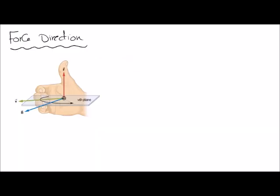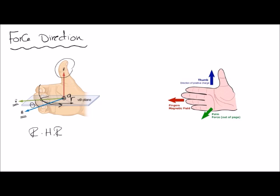How do we get the direction of the force? We use the right-hand rule. Imagine a charge Q moving with velocity V making an angle theta with the magnetic field B. Using your right hand, curl your fingers from the velocity toward the magnetic field — your thumb shows the direction of the force. Another way: make your right hand flat, point your thumb in the direction of velocity and your fingers toward the magnetic field; the force is the perpendicular vector to your palm.